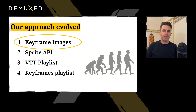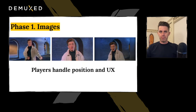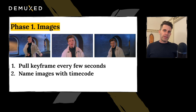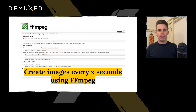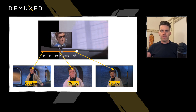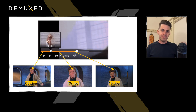So we started with keyframe images. When we were first asked to build this feature, it seemed a no-brainer. You would create images that the players would handle — the UX, the positioning, all the other detail — and you would just create these keyframes. The solution was obvious: pull a keyframe every few seconds, give it a name that means something against the timecode in the video, and we're done, right? Creating images every few seconds using FFmpeg — if you look in the wiki, it's pretty straightforward. Naming them every 5, 10, or 15 seconds — a 5-second interval made a lot of sense. We thought we were done. Feature shipped.